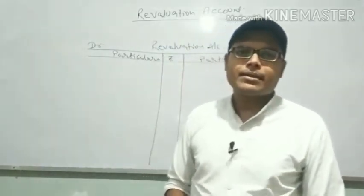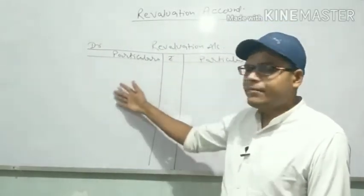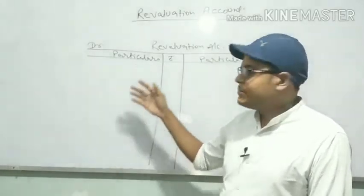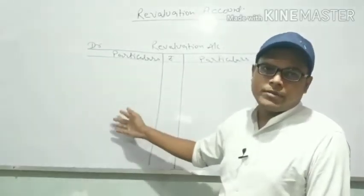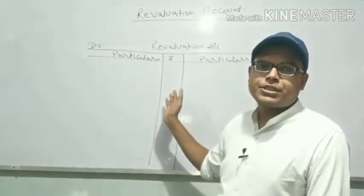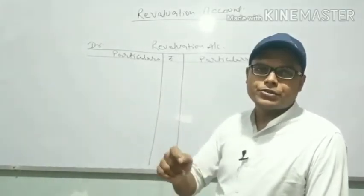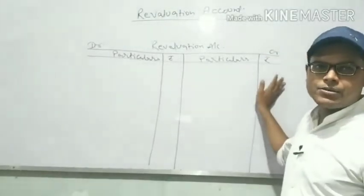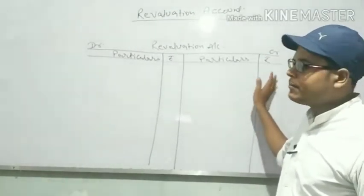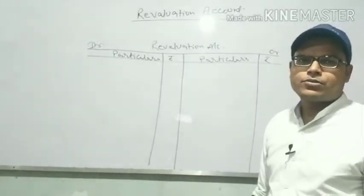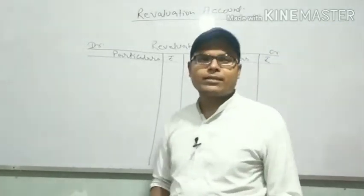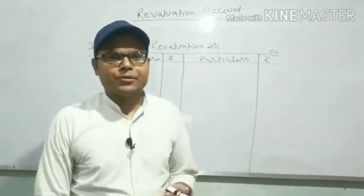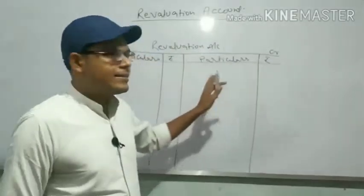Lastly, we look at the balance of debit and credit sides. If the debit balance is more, it means a loss — partners will distribute it among themselves in old ratio. If the credit side is more, it is a gain, which partners will share in their old ratio. This is how we prepare the Revaluation Account.